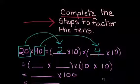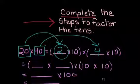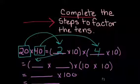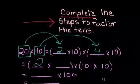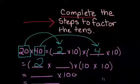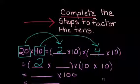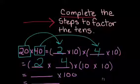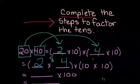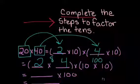I'm going to take my 2 that I've already broken apart from 20, and I'm going to write it here. I'm going to take my 4 that I broke apart from 40, and I'm going to write it here. I know 2 times 4 is 8. I also know 10 times 10 is 100. I know 8 times 100 is 800.